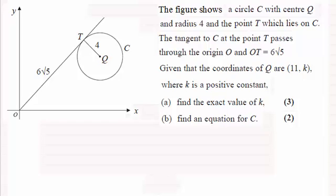Okay, welcome back if you had a go. So first of all we've got to find out the exact value of K, K being the y-coordinate of the coordinates of the centre Q. Let's just mark those coordinates in first of all. We got Q has coordinates 11, K. And so how do we go about finding K?